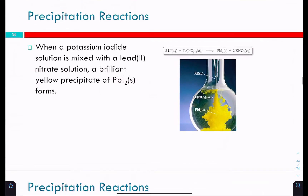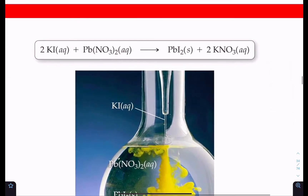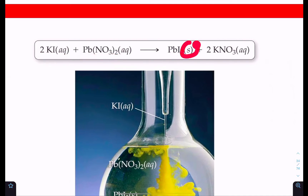One visually striking example is mixing potassium iodide with a solution of lead(II) nitrate, which forms a brilliant yellow precipitate of lead iodide. The balanced chemical equation shows potassium iodide and lead(II) nitrate as reactants yielding lead iodide solid and potassium nitrate.